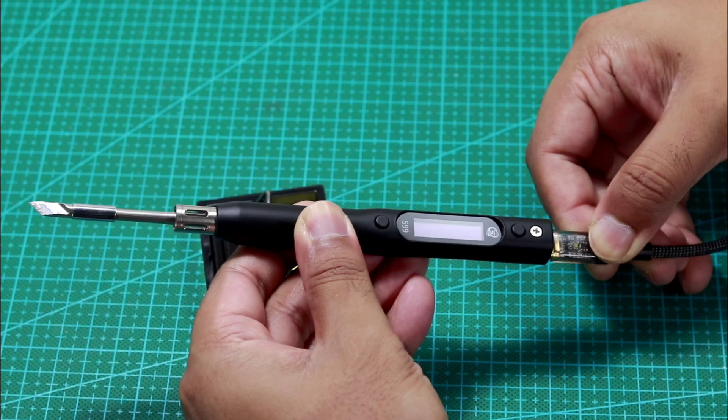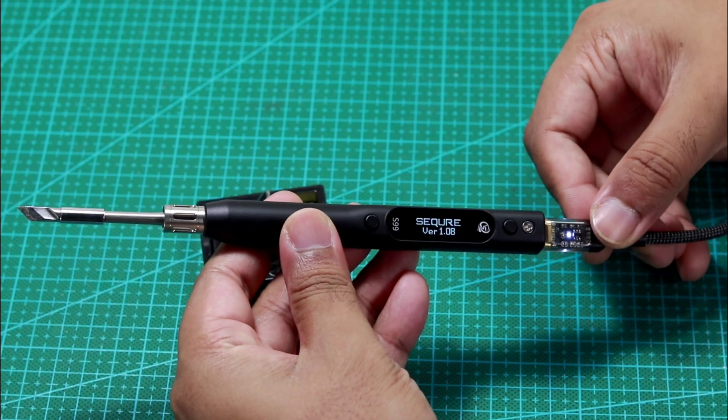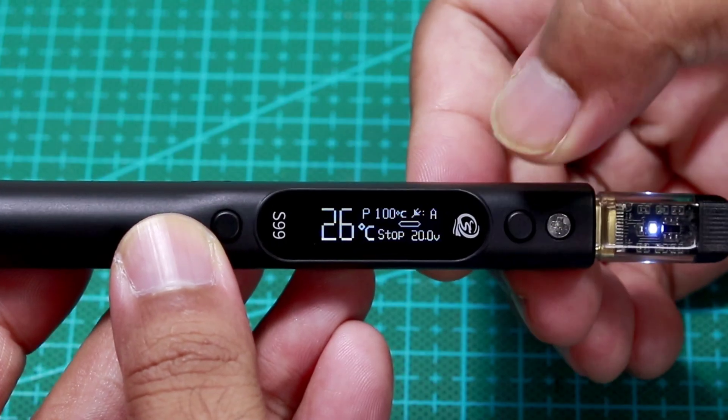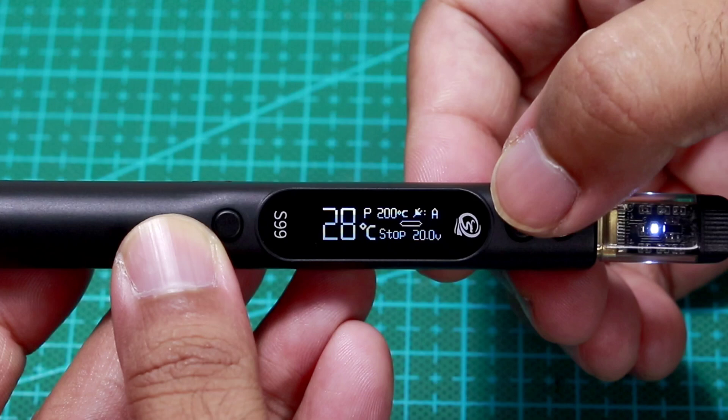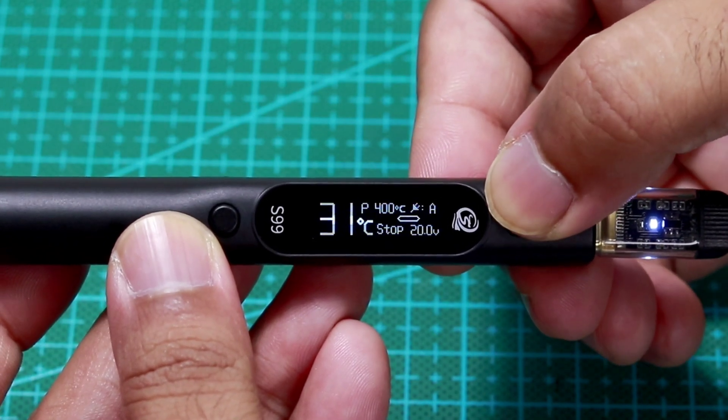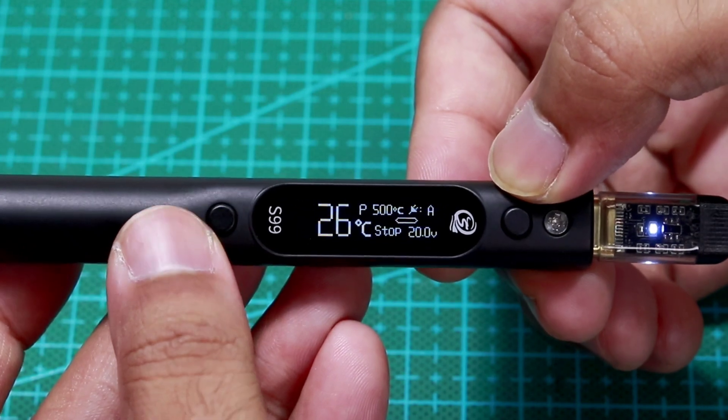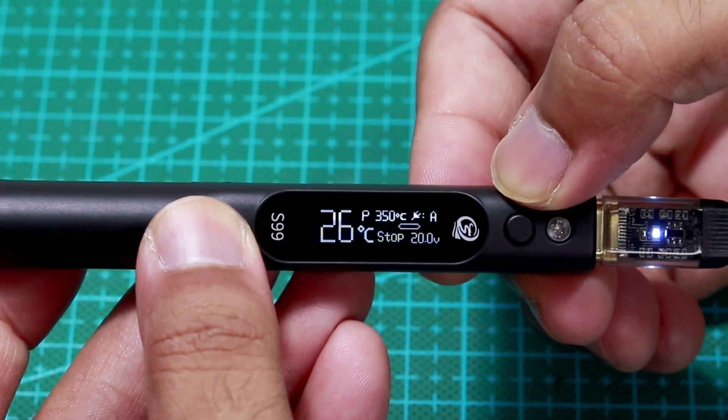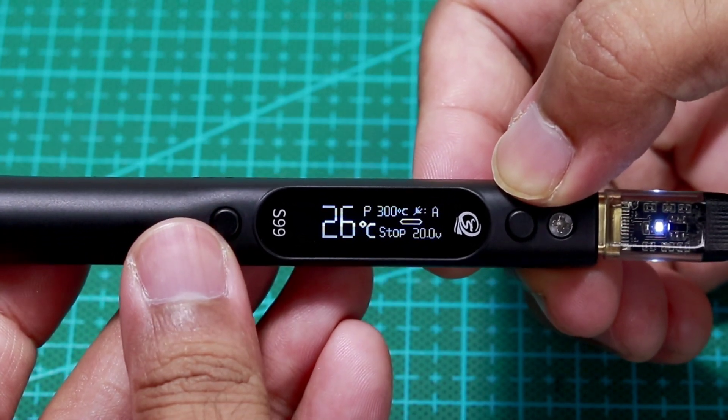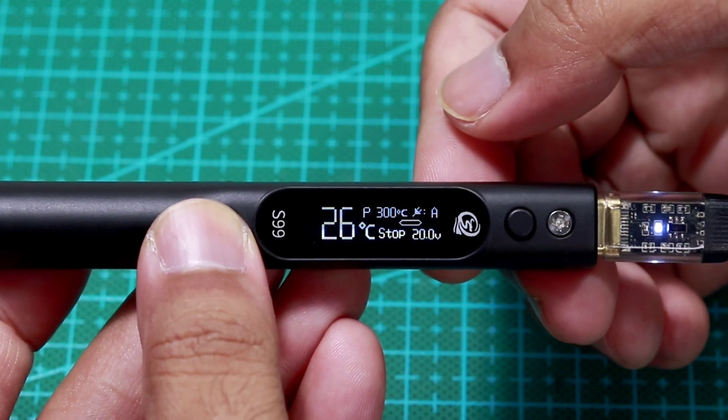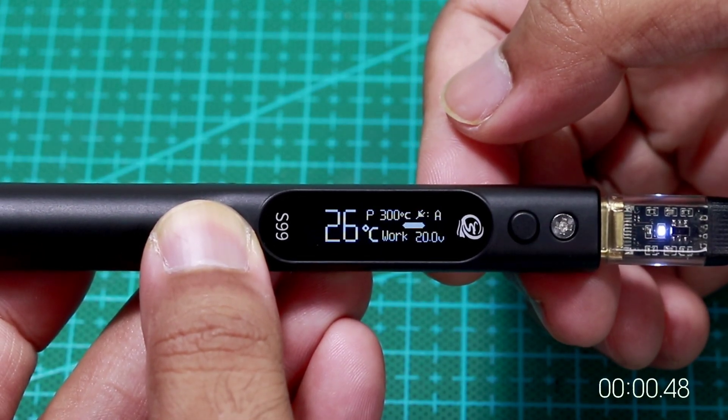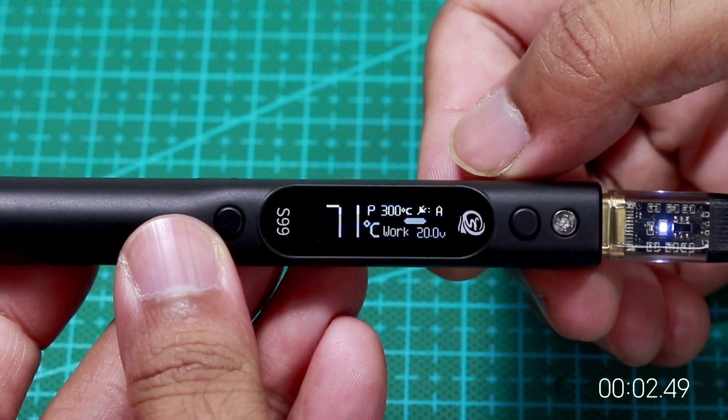Powering the soldering iron and no explosion. That's great. Here the tip temperature and input voltage is seen on the display. Pressing the buttons will change the temperature range from 50 degree to 500 degree Celsius. I kept the temperature to 300 degrees and long pressed the left button. The heating started and within 7 seconds the tip reached 300 degrees Celsius.